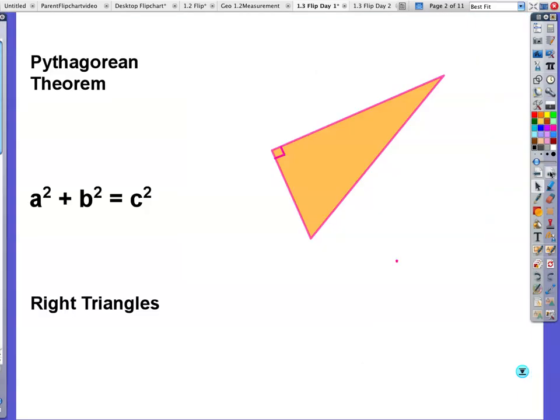Okay, first quick review, or maybe it's not a review, Pythagorean Theorem. The formula for the Pythagorean Theorem, it's one of the most famous formulas of all time, is a squared plus b squared equals c squared.